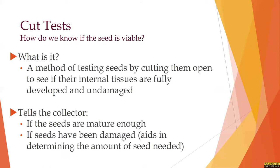A cut test is one method of determining if seed is mature. You do this by cutting a seed open to look at those internal tissues and see if they're fully developed and undamaged. This can tell the collector whether the seeds are mature enough, but it can also let you know if the seeds have been damaged, aiding in determining the amount of seed needed to be collected. If you get to a site and do a cut test and about 30% or greater of the seed has been damaged and is not viable, you might want to move along and find an alternate collection site. Otherwise, if this location has hundreds of plants, you can increase the number of plants collected from to compensate for those non-viable seeds.